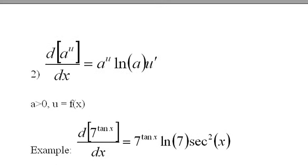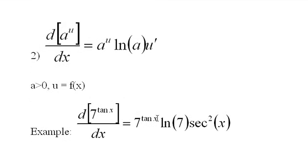And here's a good example. The derivative of 7 to the tangent of x power. Notice this f of x is a constant, and this is not a constant, g of x. Well you just repeat the 7 to the tan of x, multiply it times the log of 7, and then you multiply it times the derivative of the tangent of x, just like this formula suggests.